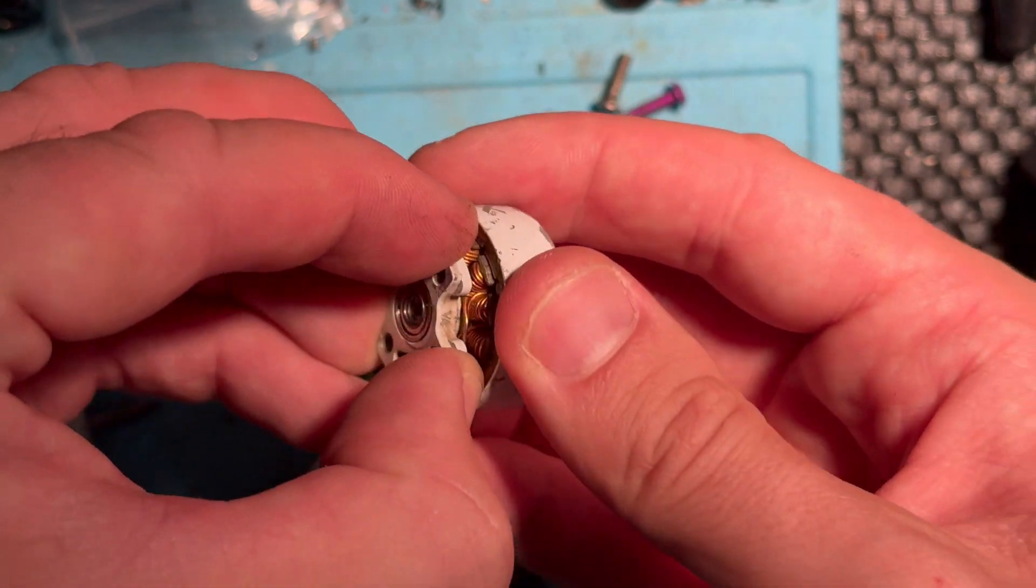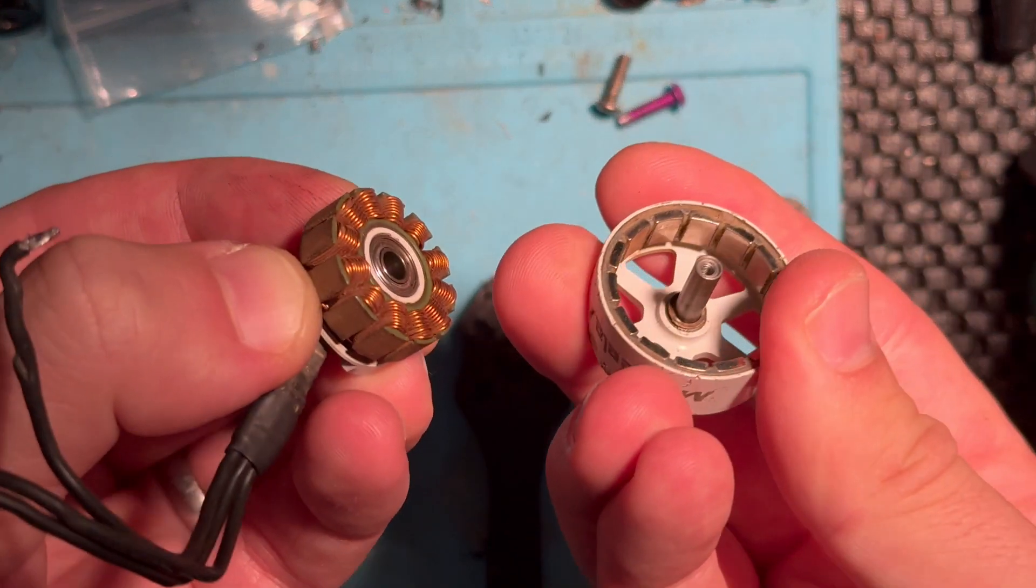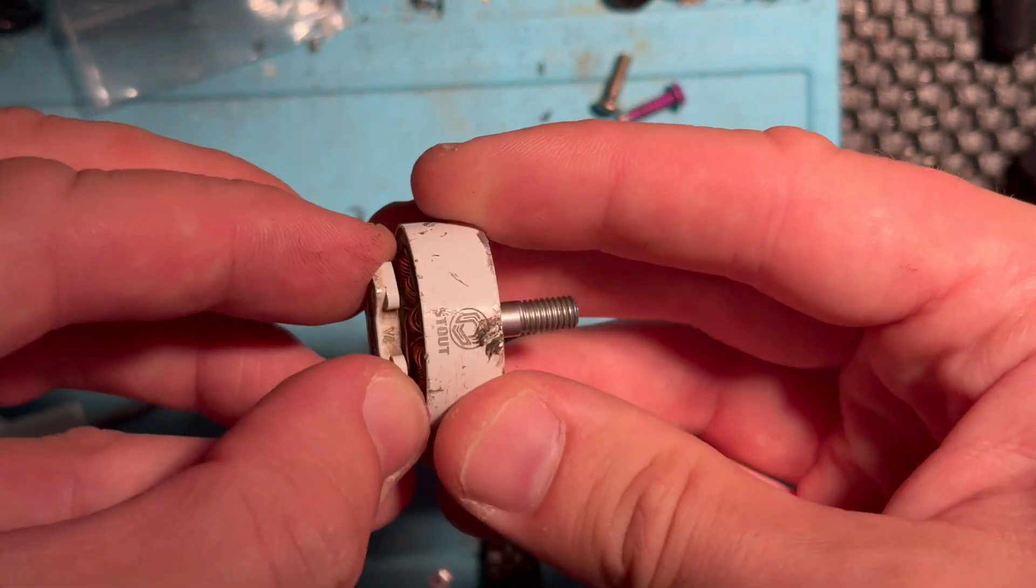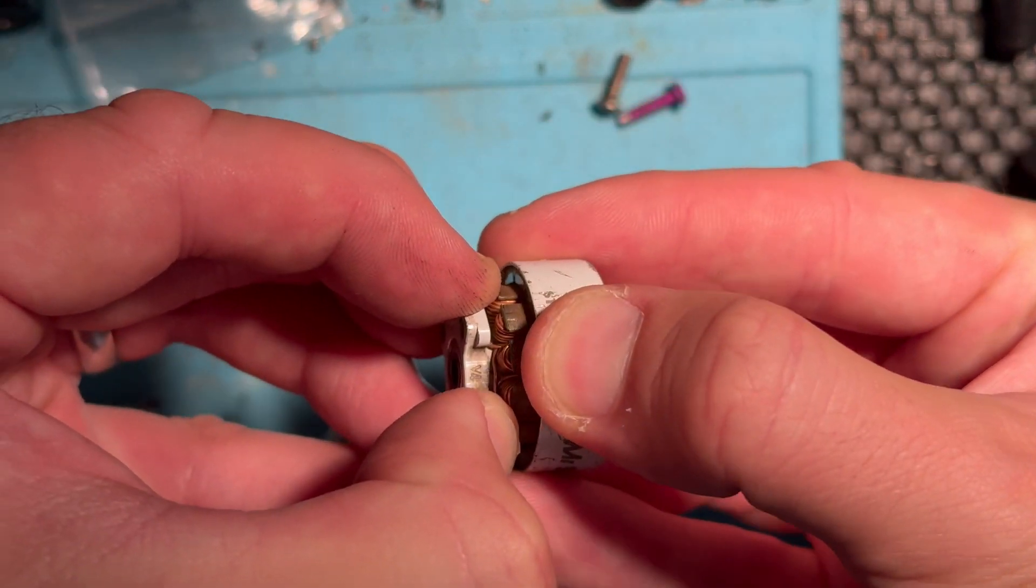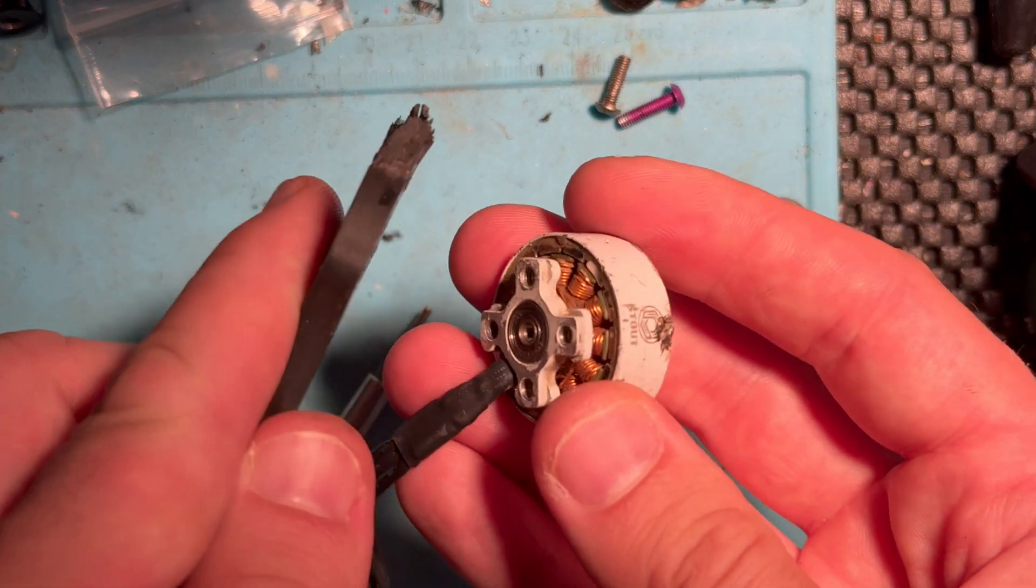And at this point, you should be able to separate your motor. Now it is a little tough because of the magnets inside. It really wants to stay together. So it can be a little bit of a pull to get it off there.